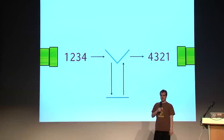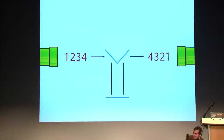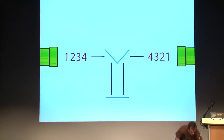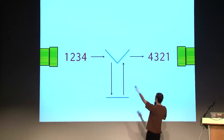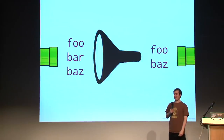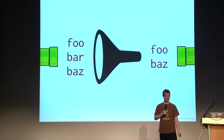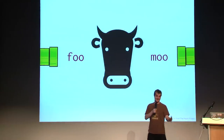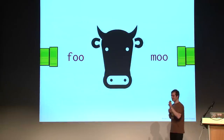Next one — this is 'rev,' which is reverse: it mirrors the input. Next: grep — this filters and removes certain things. And this one is 'wc' (kase) — you'll see more of that later.